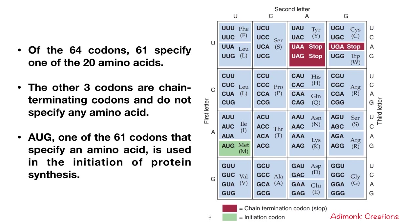Here is an example of the genetic code — the figure shows how 64 codons can be formed by only four nucleotide bases: U, C, A, and G. The green codon AUG is the initiation codon, coding for methionine. The three codons highlighted in red — UAA, UAG, and UGA — are the stop codons. Of the 64 codons, 61 specify one of the 20 amino acids; the three remaining are chain-terminating codons. AUG is also used for initiation of protein synthesis and is known as the initiation codon.